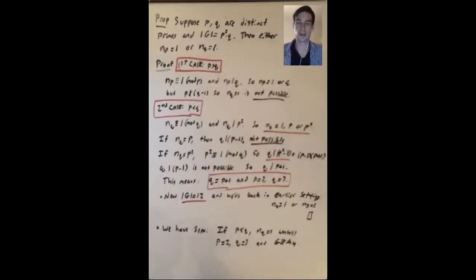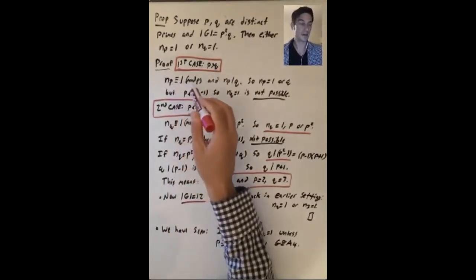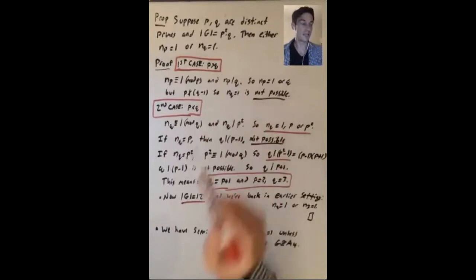First, suppose p is bigger than q and look at np. So by Sylow 3, np is congruent to 1 mod p, and np divides q.